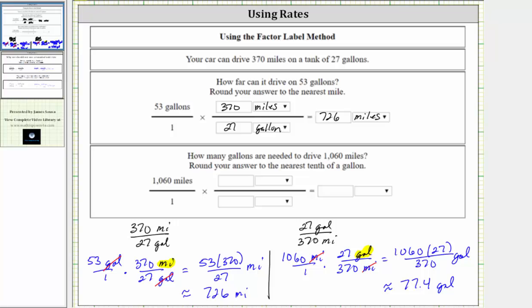So entering our work, we multiplied by the rate of 27 gallons per 370 miles, which gave us to the nearest tenth of a gallon, 77.4 gallons.